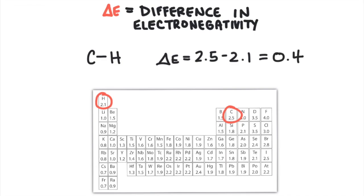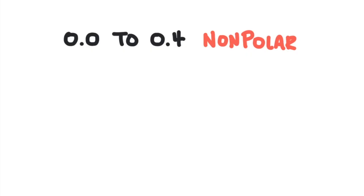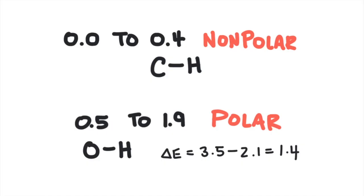If your answer is between 0 and 0.4, the electrons are being shared evenly — this is called a non-polar bond. If your answer is between 0.5 and 1.9, the electrons are not shared evenly. The element with the greater electronegativity is attracting the electrons in the bond closer to itself. Since the electrons are pulled closer to that element and the electrons are negatively charged, the element will have a slightly negative charge, shown with the symbol delta negative. The other element will have a slightly positive charge, shown with the symbol delta positive. This is called a polar bond because there are two poles in this bond — that is, a separation of charge.